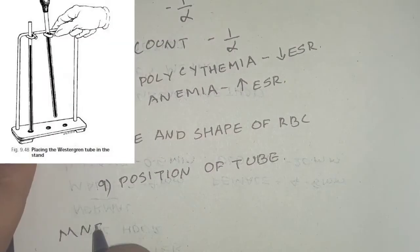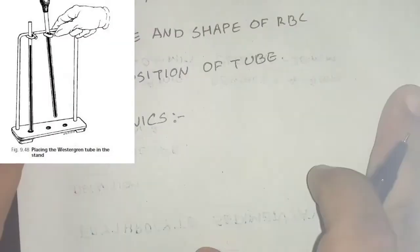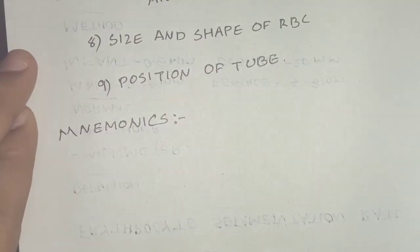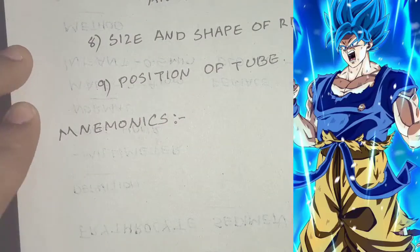Variation in normal shape and an increase in size decrease the ESR. If the apparatus or tube is kept tilted rather than vertical, ESR will be increased.